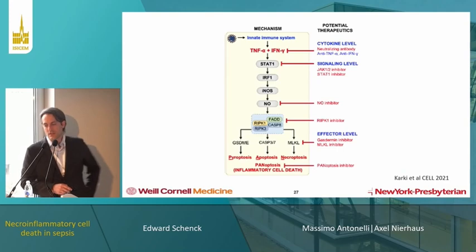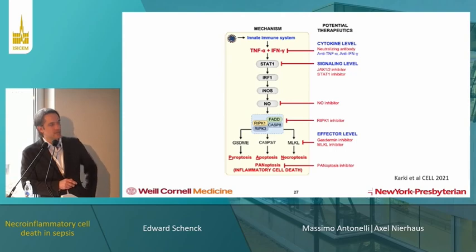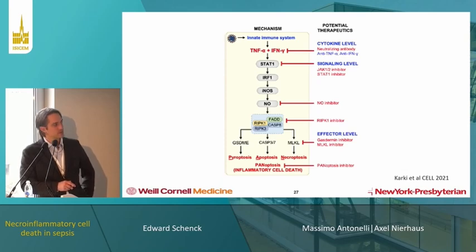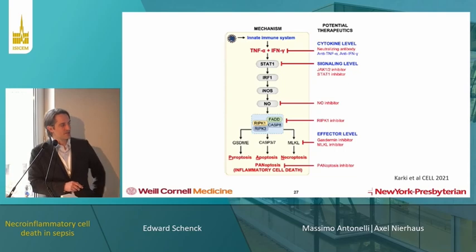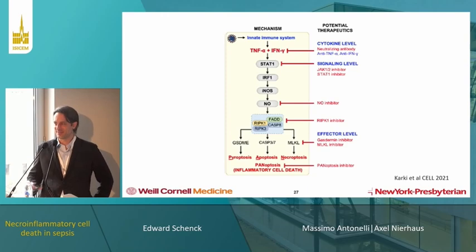There are actually several mechanisms to inhibit these pathways: at the stimulating level by stopping TNF or interferon, through JAK-STAT pathways that lead to necrosome activation, through RIP kinase inhibitors, and through gasdermin and MLKL inhibitors. The other terminology for necroinflammatory cell death is panoptosis — the combination of pyroptosis, apoptosis, and necroptosis together. I prefer the term necroinflammatory, but there is disagreement in the community.